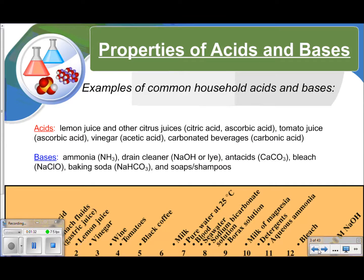Some examples of common household acids and bases that hopefully you're familiar with. Notice here in parentheses, I have the name of the acid or the base. You can find this on the back of your labels whenever you are drinking or eating these food items. Common acids: lemon juice and other citrus juices will contain citric acid and absorbic acid. Tomato juice definitely has absorbic acid. Vinegar is acetic acid. And all of your carbonated beverages will have carbonic acid in them.